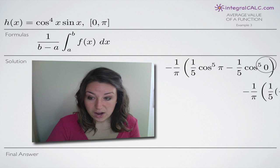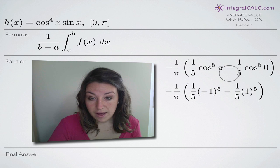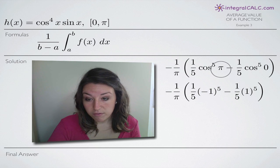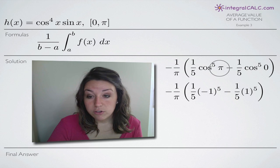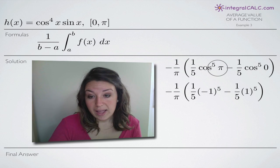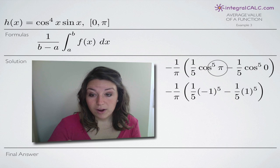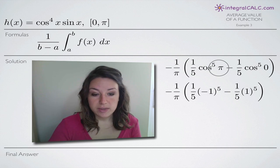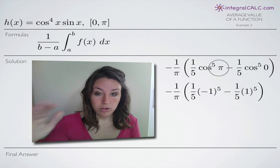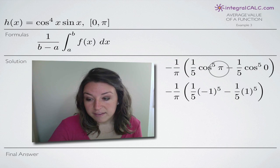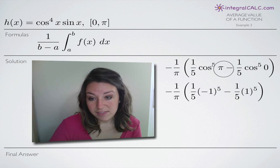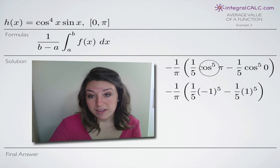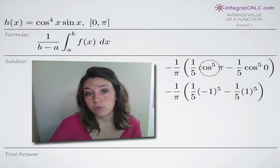We plug that in and start simplifying. For cosine to the fifth of pi, we look at cosine of pi and grab the unit circle. Cosine of pi gives the angle along the x-axis, and at the angle pi we're looking for the x-coordinate, because when we evaluate cosine of an angle on the unit circle, we look at the x-coordinate.